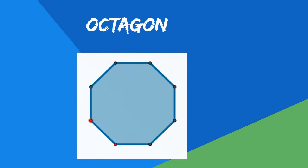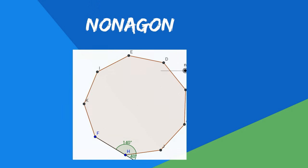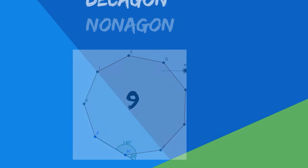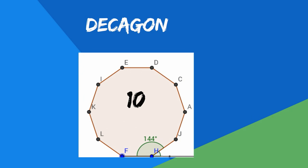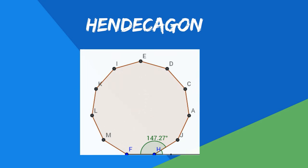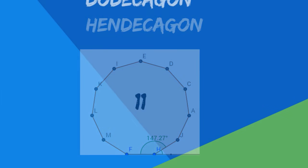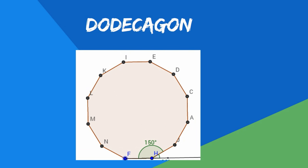An octagon has eight sides. A nonagon has nine sides. A decagon has ten. A hendecagon has eleven. And a dodecagon has twelve.